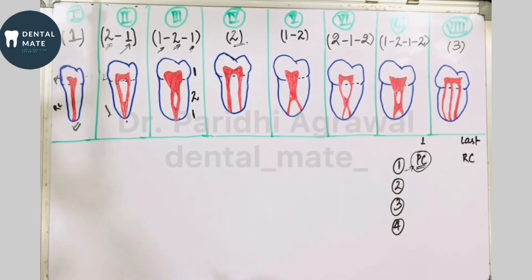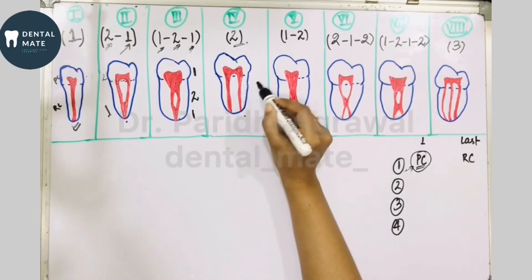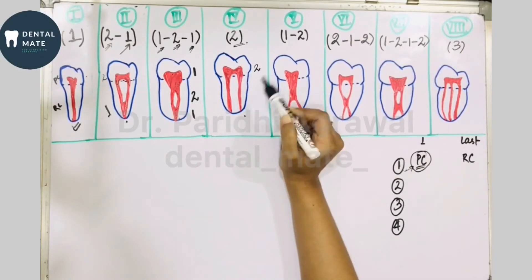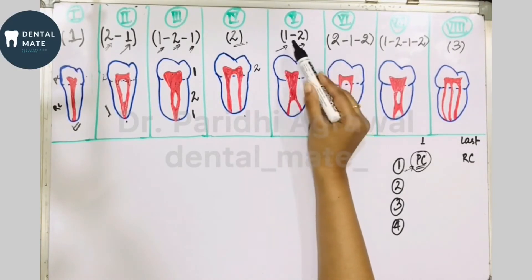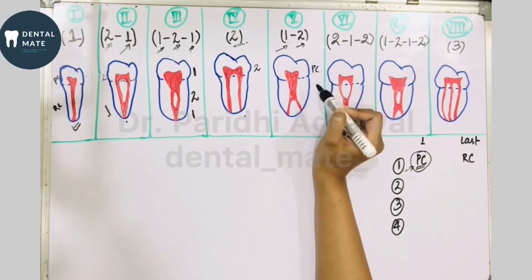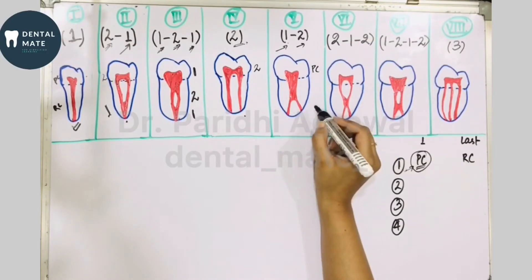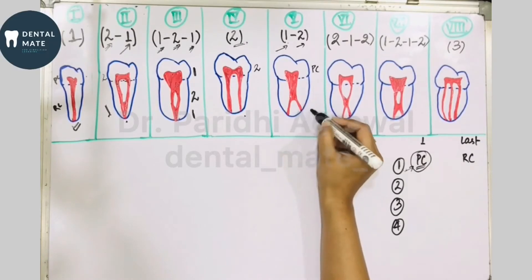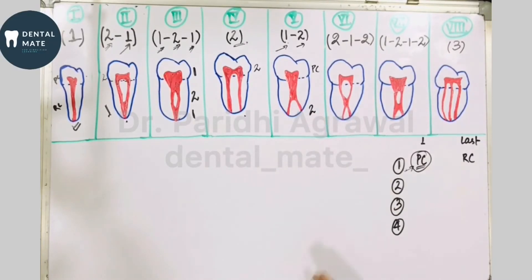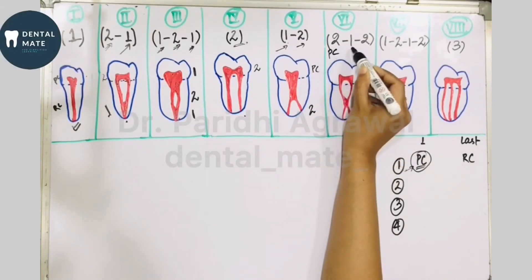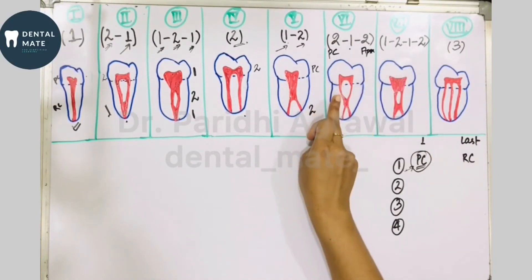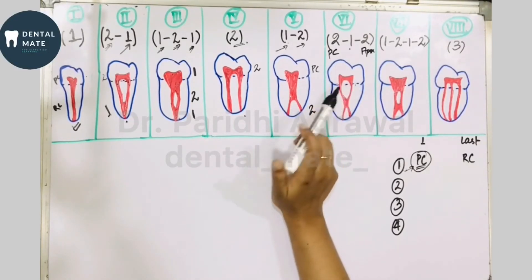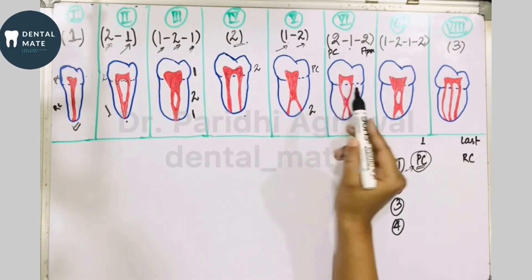In Type 4, two separate distinct canals extend from the pulp chamber all the way to the apex — represented as 2. In Type 5 (1-2): a single canal leaves the pulp chamber and divides into 2 canals just short of the apex. In Type 6 (2-1-2): two separate canals leave the pulp chamber, merge in the body of the root, and then re-divide into 2 just short of the apex.